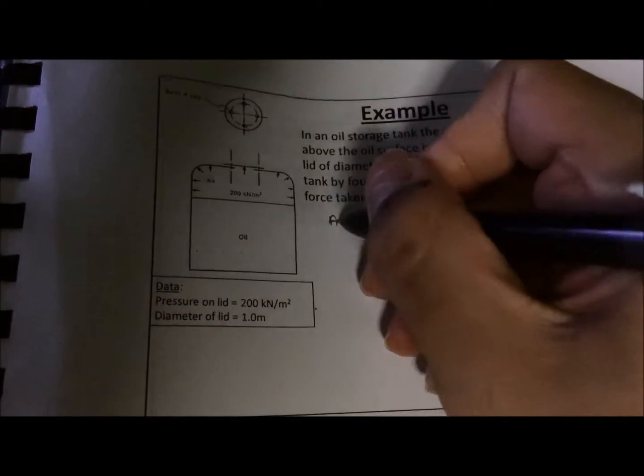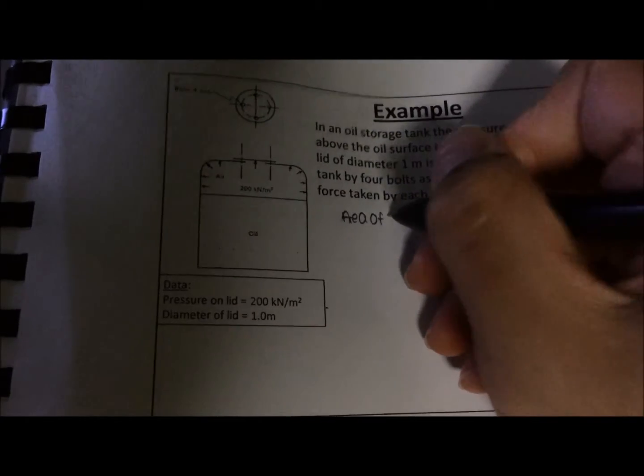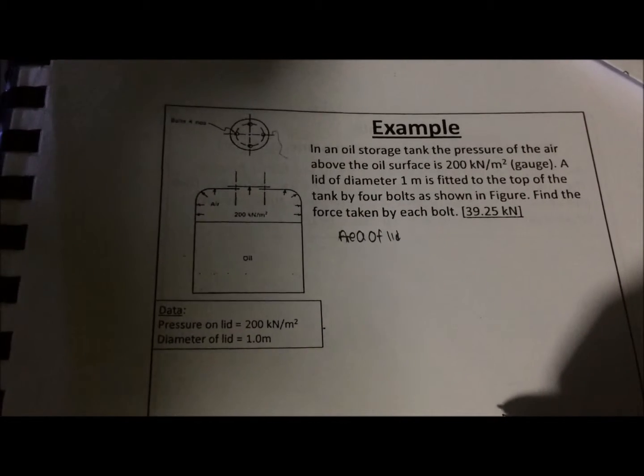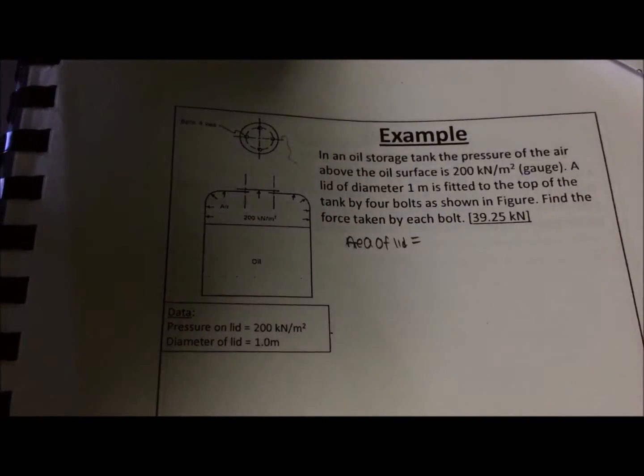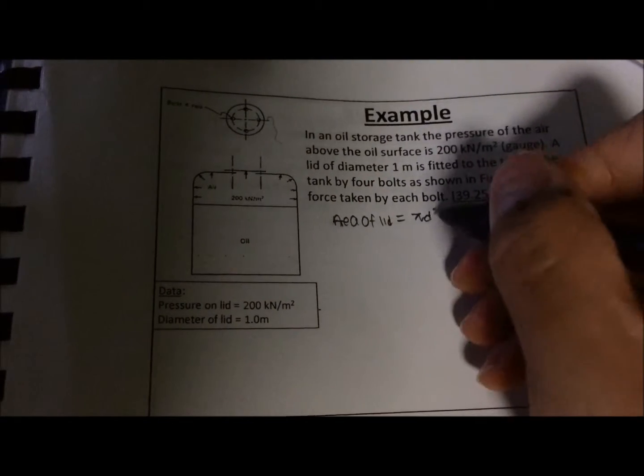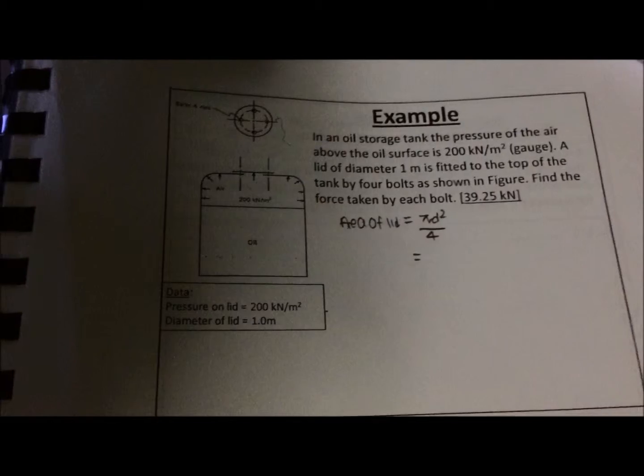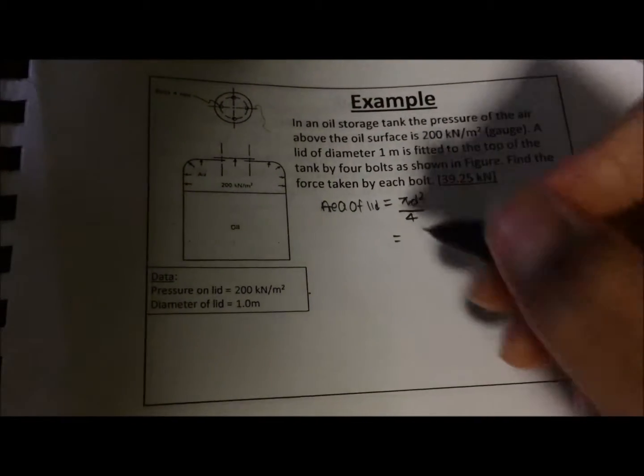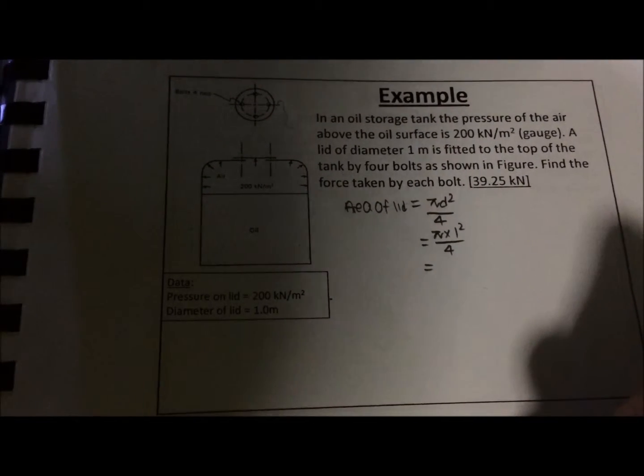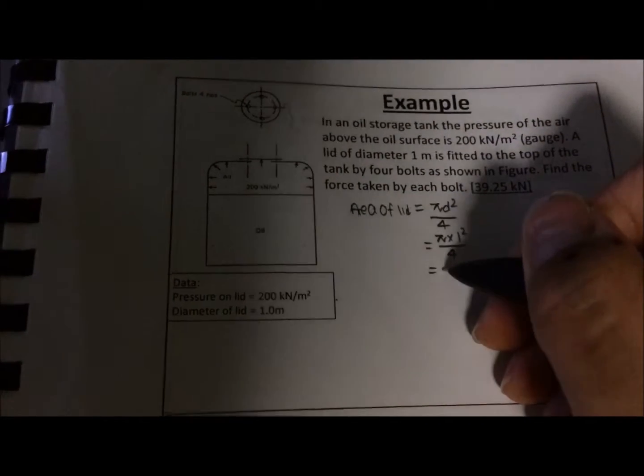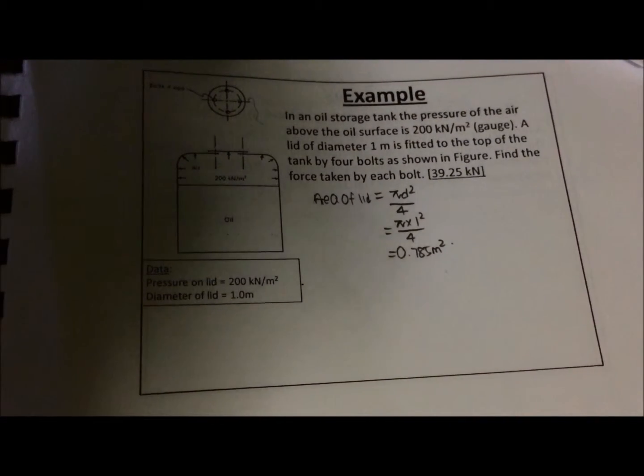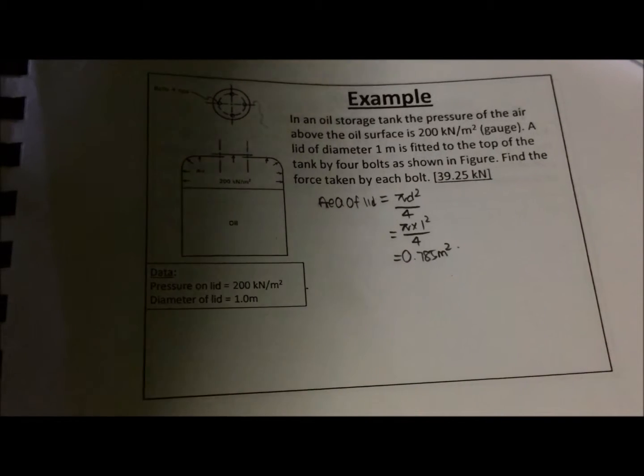have to get the area of the entire lid. The diameter of the lid is given as 1 meter. From engineering math, we use pi d squared over 4 to get the area, and you substitute in the value and you will get 0.785 meter squared.